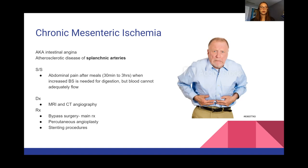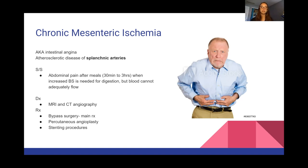Chronic mesenteric ischemia, also known as intestinal angina, is an atherosclerotic disease of the splanchnic arteries. Abdominal pain occurs after meals — about 30 minutes to three hours — because more blood supply is needed for digestion but can't get there. Diagnosis is with MRI and CT angiography. Treatment is most often bypass — rerouting the bowel around the problem area — or angioplasty or stenting to help with blood supply.